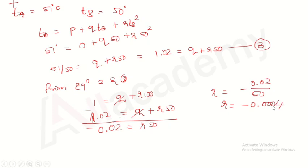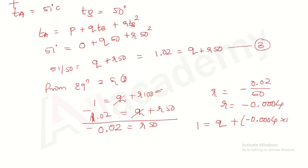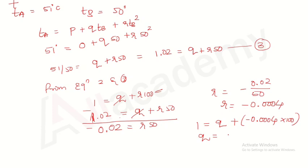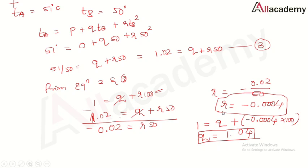Now substituting r = -0.0004 into equation 2: 1 = q + (-0.0004)·100, giving q = 1 + 0.04 = 1.04. So the three constants are: p = 0, q = 1.04, and r = -0.0004.